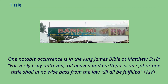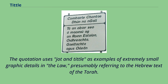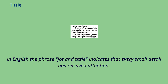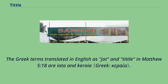One notable occurrence is in the King James Bible at Matthew 5:18: 'For verily I say unto you, till heaven and earth pass, one jot or one tittle shall in no wise pass from the law till all be fulfilled.' The quotation uses jot and tittle as examples of extremely small graphic details in the law, presumably referring to the Hebrew text of the Torah. In English, the phrase jot and tittle indicates that every small detail has received attention.